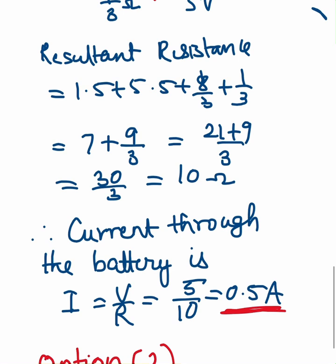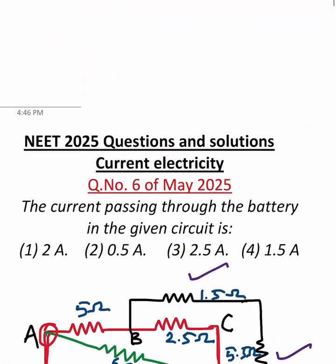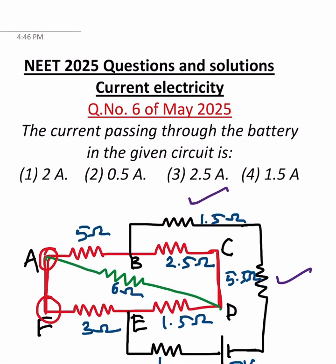After that, battery is given as 5, so I is equal to V by R, which is 5 by 10, which is 0.5 amps. This is option 2. If you go up and see, this is the option 2, which is 0.5 amps. Bye, God bless you all.